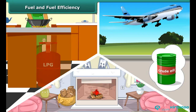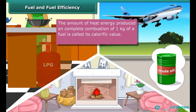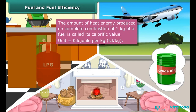All fuels do not burn efficiently. Fuel efficiency is determined by its calorific value. The amount of heat energy produced on complete combustion of 1 kg of a fuel is called its calorific value, and it is expressed in a unit called kilojoule per kg. The calorific value of LPG is more than wood or coal, which is why LPG is a more efficient fuel than wood or coal.